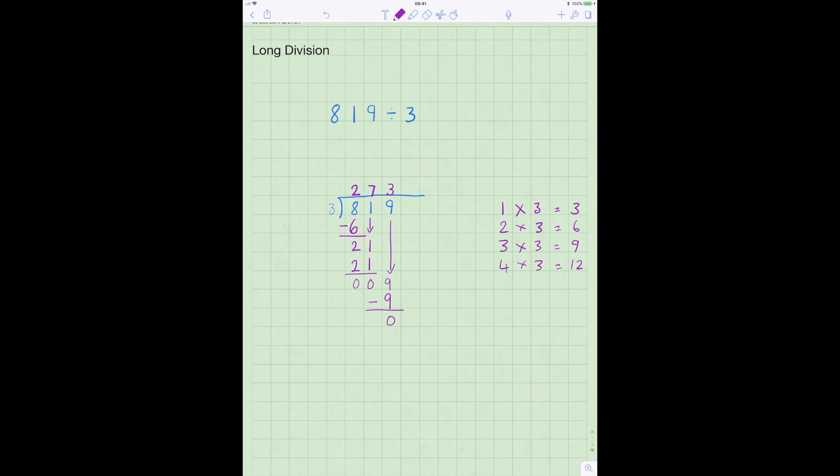819 divided by 3 equals 273. And as I said at the start of the video if you wanted to check that you've got this right you would just work it back the other way and say does 273 times 3 equal 819? Well you can obviously work that out using long multiplication which I will show you in another video or just put that into your calculator to prove that you've got the answer correct.